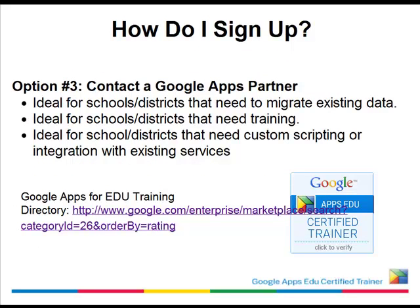The third option is to contact a Google Apps for Education partner through the Marketplace. They will help guide you through the process — something these people have done many, many times before. They will help migrate your data, integrate Google Apps with existing services such as a cloud-based grade book or attendance program, do custom scripting, and allow your various systems to talk to one another. So those are your three options to sign up — you can sign up yourself free of charge, or contact one of the Google Apps partners to help guide you through the process.